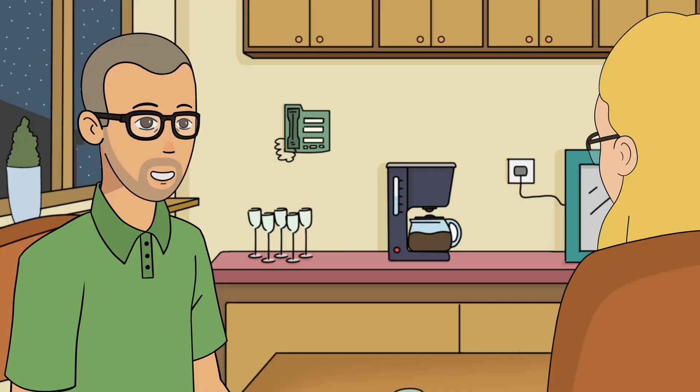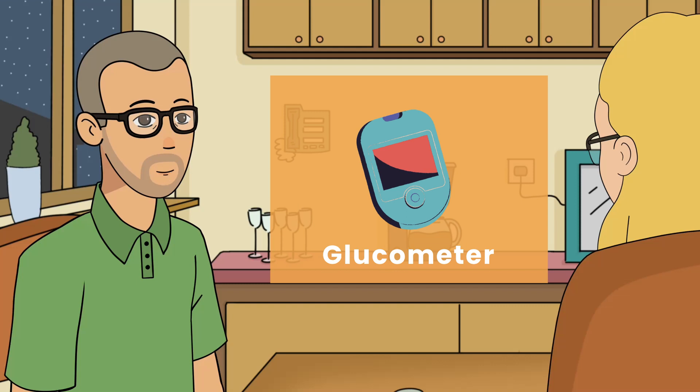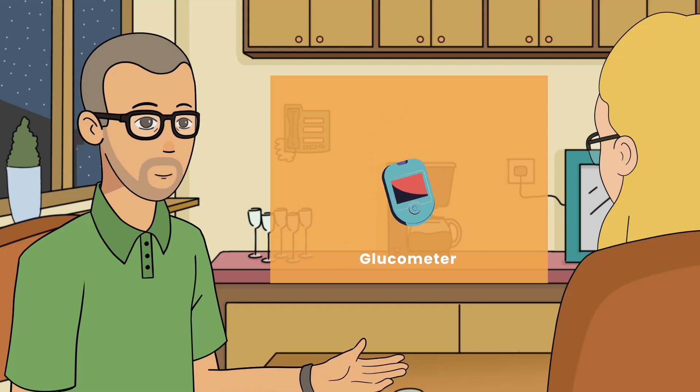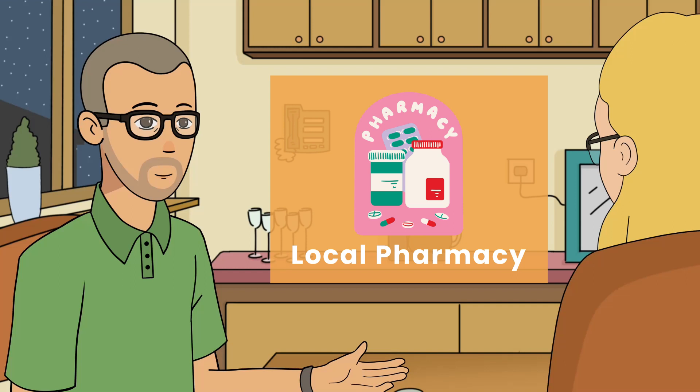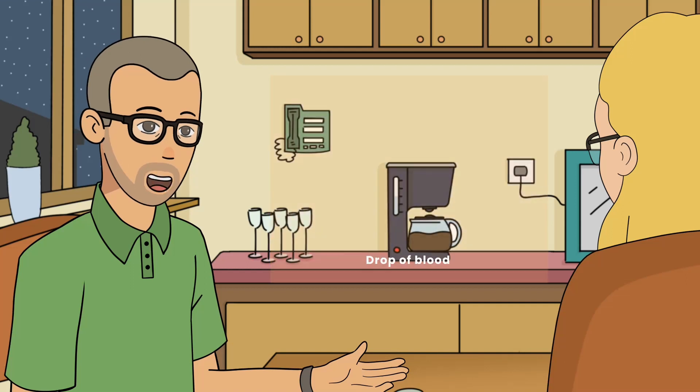You need a device called a glucometer to check your blood sugar. Most insurance plans cover it and you can get it from your local pharmacy. After that, all you need to do is add a tiny drop of blood.